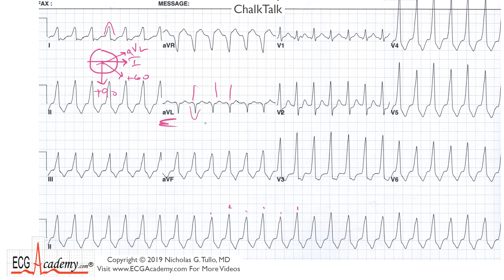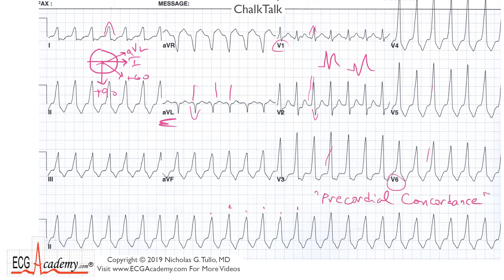In lead AVL, it doesn't look anything like a left bundle branch block. So let's look at the precordial leads and try to get a sense of if it follows any particular bundle branch pattern. In V1, it looks like it's up — could this be a right bundle type of thing? But it's really sharp with an S wave; it doesn't have an RSR prime like you'd expect for right bundle. And then V1 all the way out to V6 is all positive — they're all upgoing. That's called precordial concordance, and it's strongly suggestive of ventricular tachycardia.